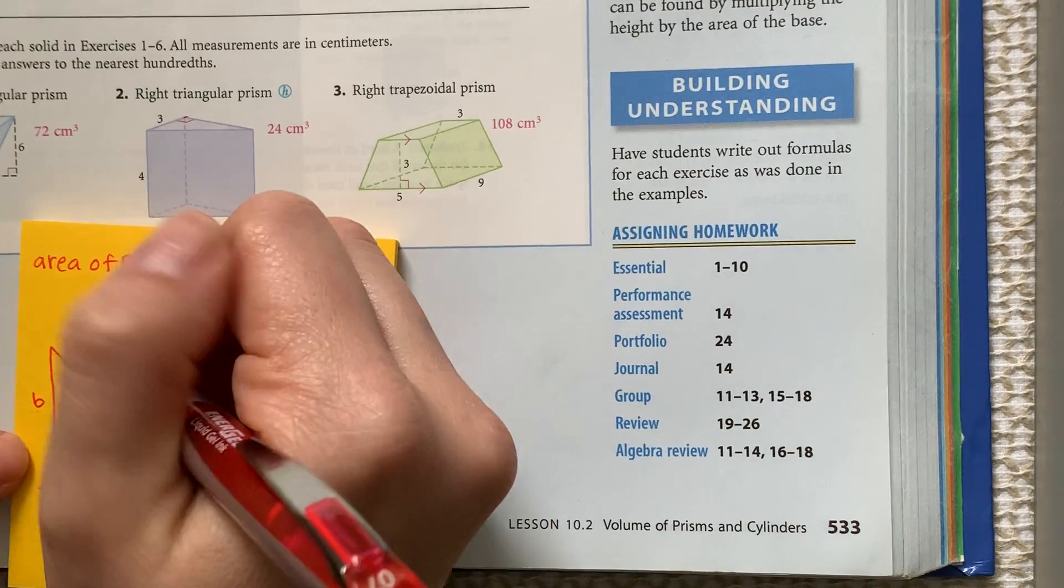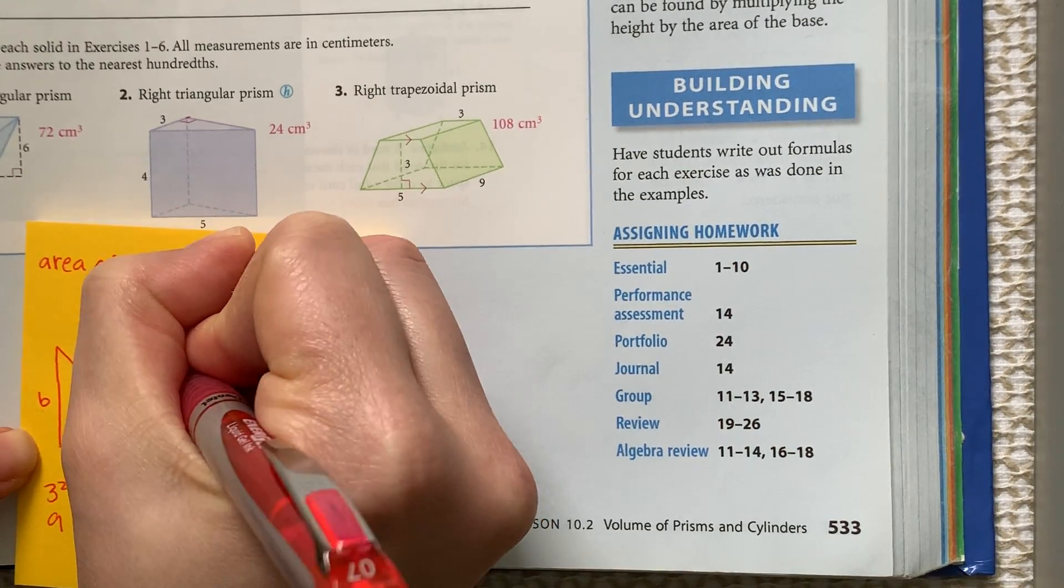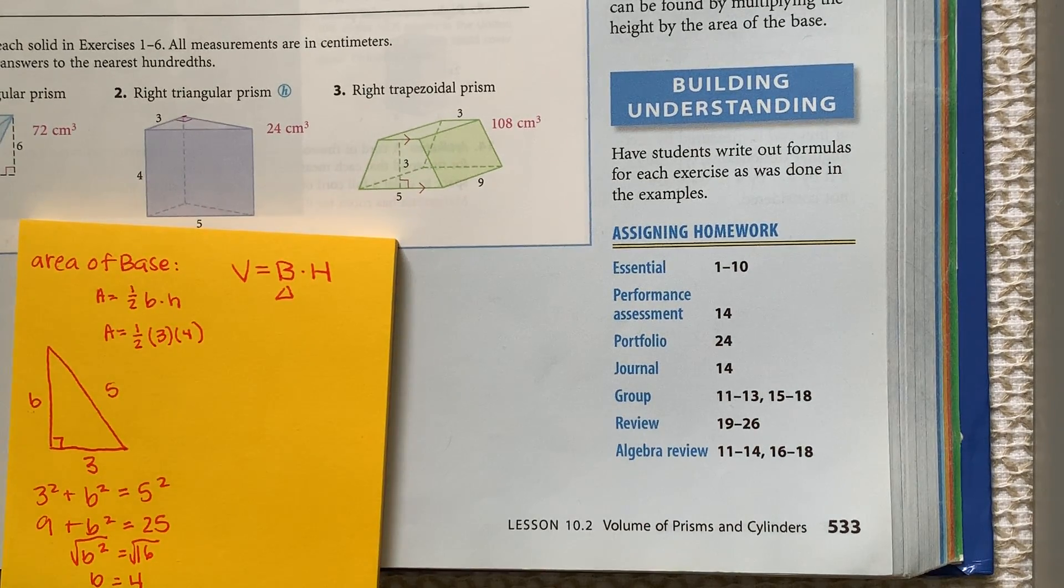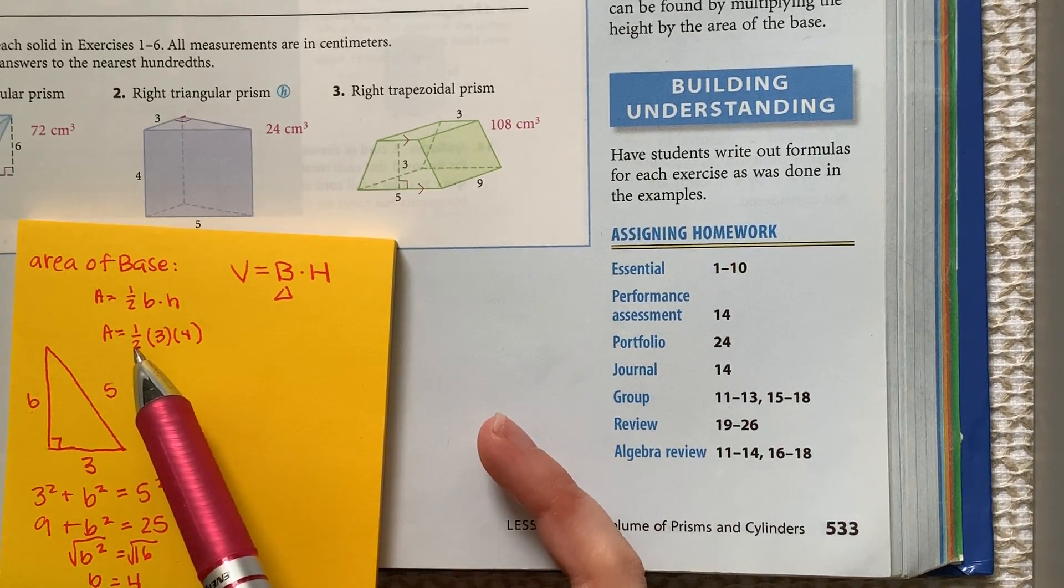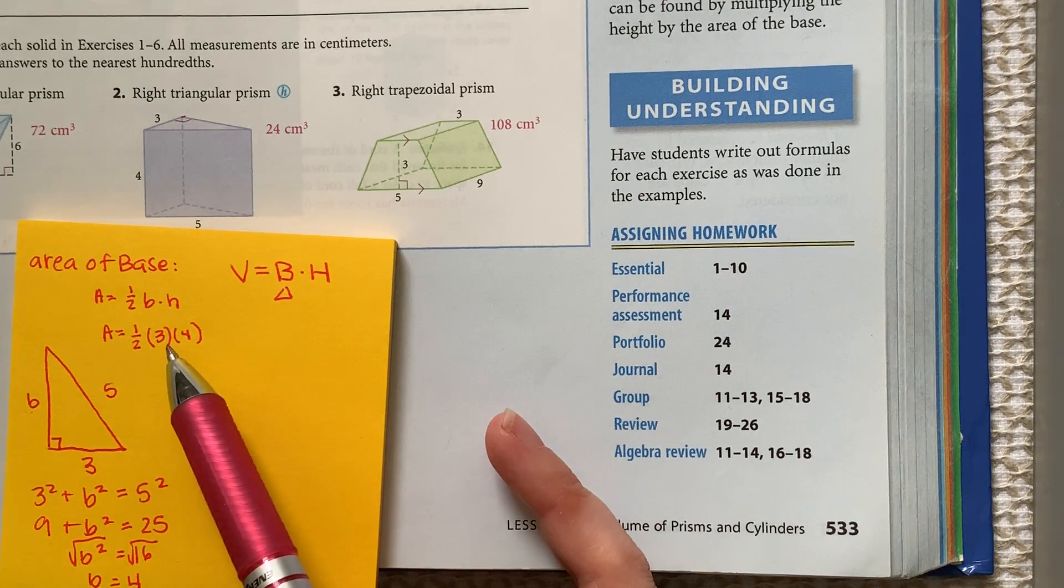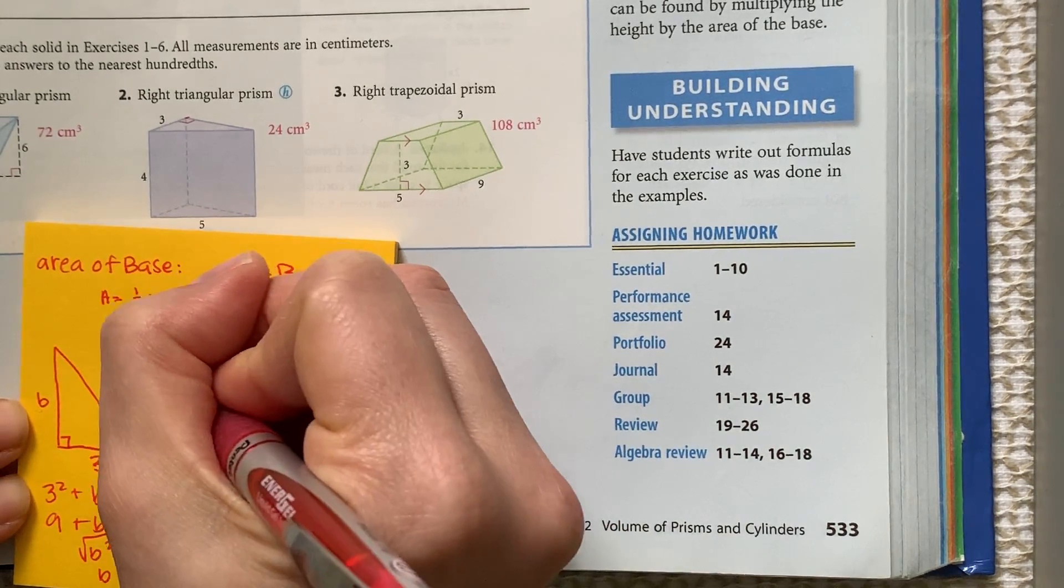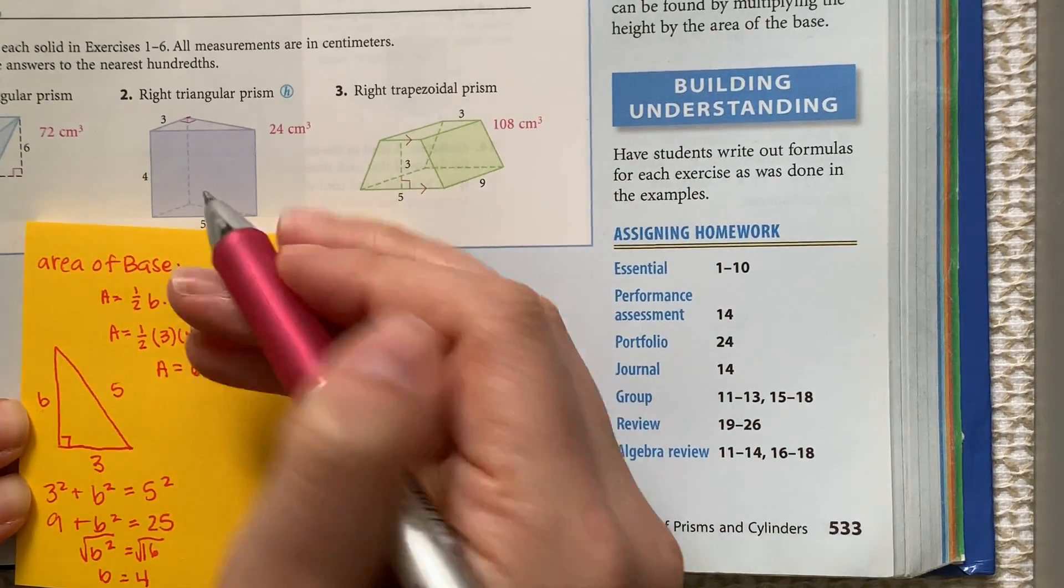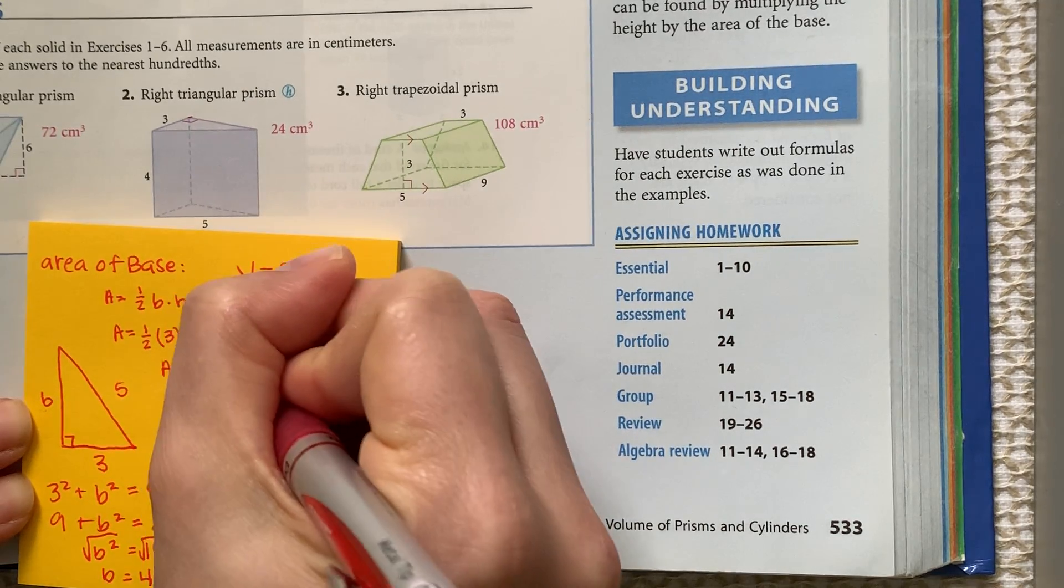And so to find the area of the base, the area is equal to one half times 3 times 4. Now remember, this is all multiplication, so we get to choose our order. We can do 3 times 4 is 12 cut in half is 6, we can do half of 4 is 2 and 2 times 3 is 6. Regardless, we are going to get that the area of the base is 6. And it looks like we're in centimeters, so this is centimeters squared.